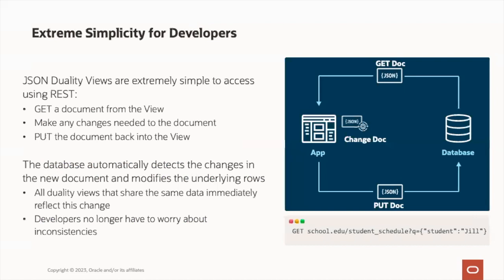JSON duality views are extremely simple to access using REST. We can use a get to retrieve a document from the view, and furthermore, we can make any changes needed to that document and put that document back into the view. We can modify the document using our REST APIs in the JSON document format. When we make updates, those updates get pushed back into the underlying tables, and the Oracle database is intelligent enough to deconstruct that document and apply those changes to the related structures underneath. The database automatically detects those changes in the new document and modifies those underlying rows, so all duality views that share that same data are immediately able to reflect this change, and developers no longer have to worry about inconsistencies.